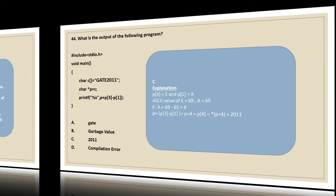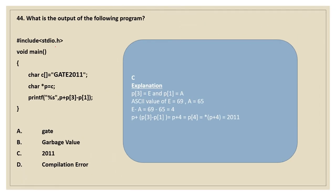Moving on to the next question. What is the output of the following program? hash include stdio.h, void main, open curly, char c is equal to "gate2011". So it is a character array. char star p is equal to c, so we are giving the address of the string to the pointer variable. Now we are going to print the string by performing some arithmetic operations on the string — that is what we are going to deduce.